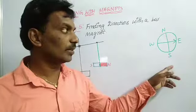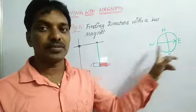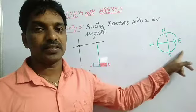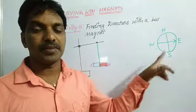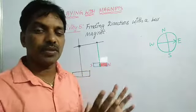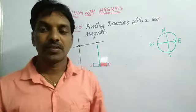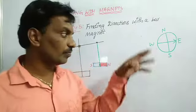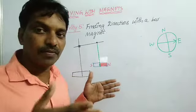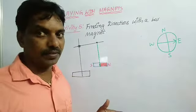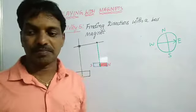According to this, north-south we have found — and east-west are the opposite directions. So by using the suspended bar magnet, we already know the north-south directions. Remaining directions we can find by using this.